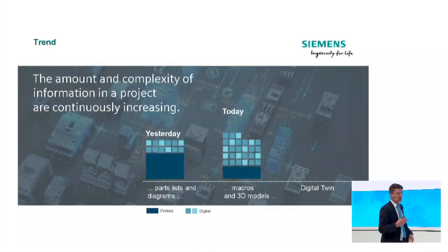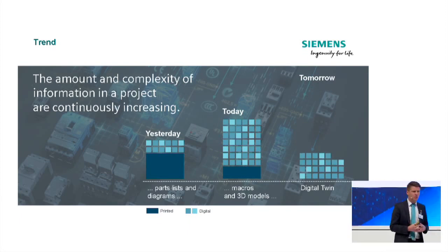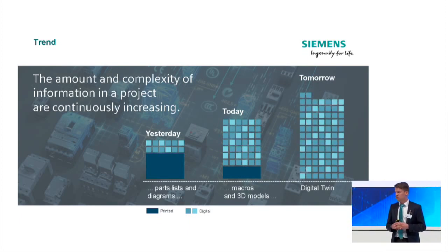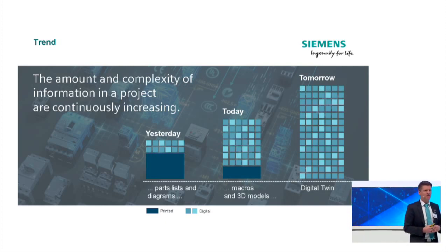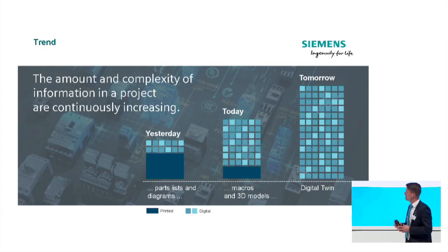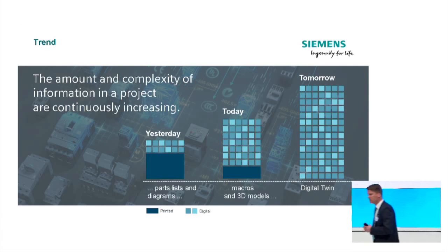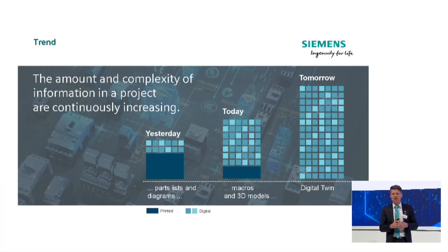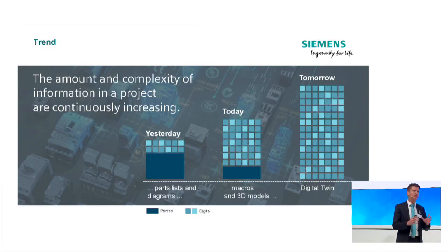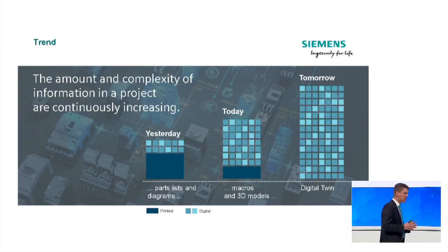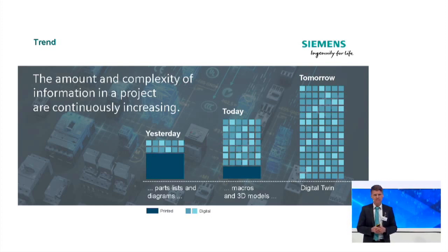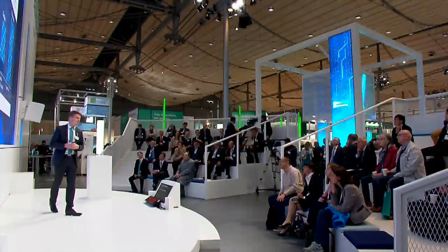The amount of data needed for a single project is constantly on the rise. What yesterday it was sufficient to have a couple of digital data files and some parts lists and diagrams — maybe in a printed format — today we already offer a lot of macros, 3D models, and many things in a digital format. Tomorrow we talk about the digital twin: the full, comprehensive description of a single product or system in a digital format.